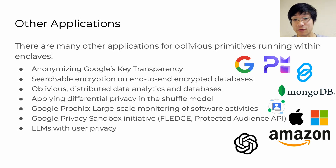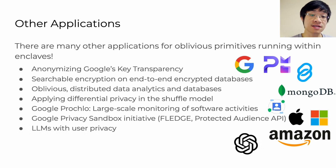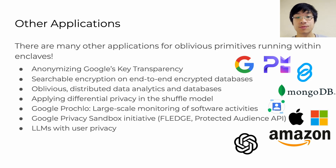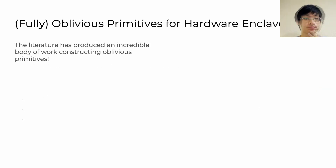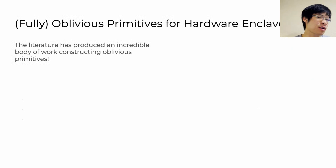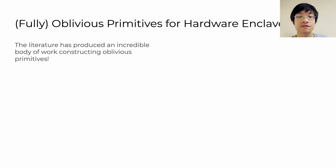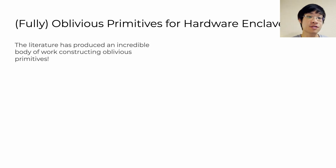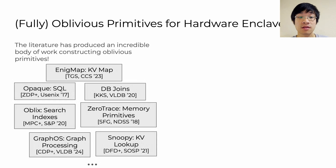LLMs can also use oblivious algorithms to conceal input queries to language models to protect user privacy without compromising functionality. Just like non-oblivious applications have non-oblivious primitives that they build off of, all of these oblivious applications are built upon oblivious primitives as well.